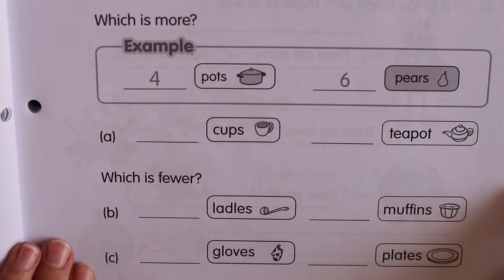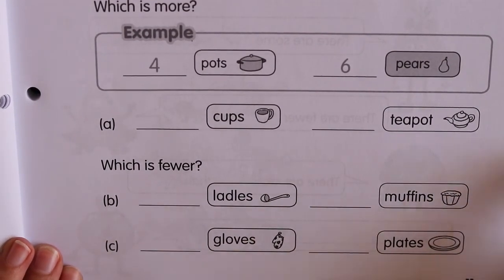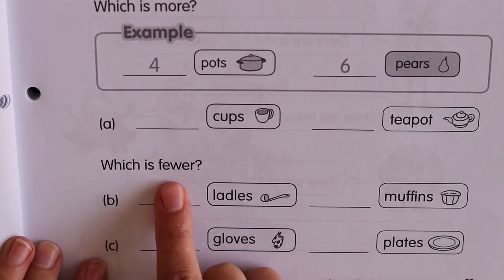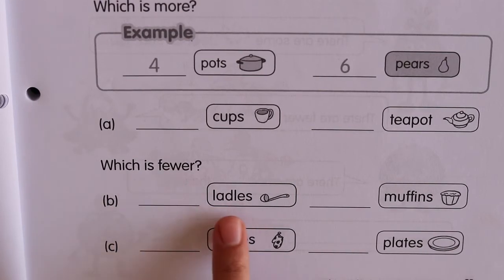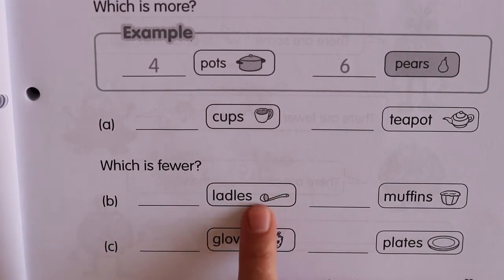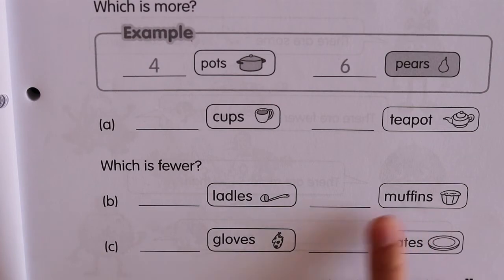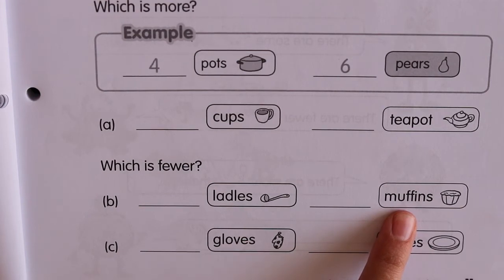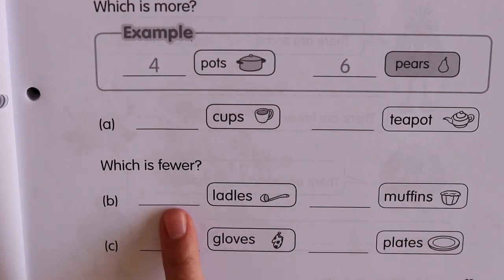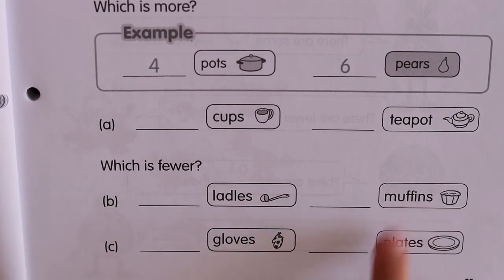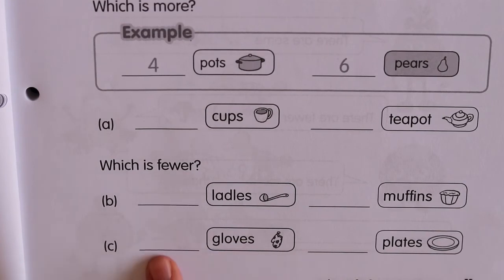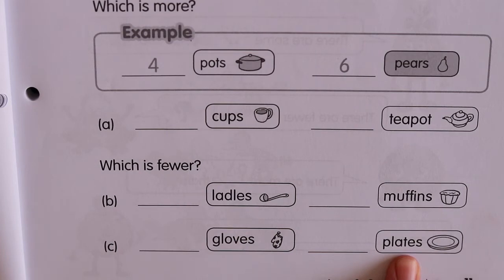The bottom section wants you to do 'which is less' — which is fewer, meaning the smaller number. Find the ladles — a ladle is this kind of spoon — and write the number. Count how many muffins there are and write it. Look between the two: which one was less, which had the smaller number — less muffins or less ladles? Colour in the box. And the last one: count how many gloves and how many plates you have, then colour in the one that has fewer.